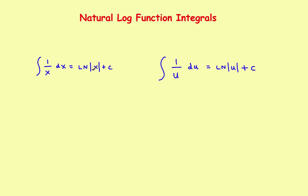You'll see the natural log of the absolute value of x. The absolute value is just to remind you that you cannot take the log of negative numbers or zero — logs are only defined for positive numbers. The formula takes two forms: if it's a simple x, the antiderivative of 1 over x is just the natural log of x. But if the denominator is something more complicated than just a simple x, then you'll have to use u-substitution.